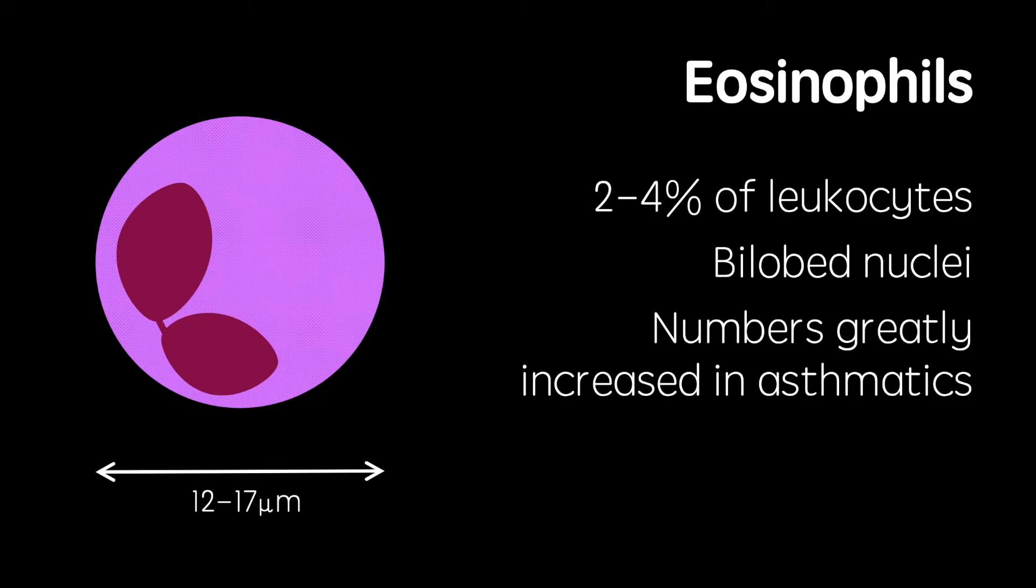Eosinophils make up only a small proportion of white blood cells in healthy patients but are greatly increased in asthmatics. These cells feature a bilobed nucleus and are between 12 and 17 micrometers wide. They also have large granules which contain substances to fight inflammatory reactions.